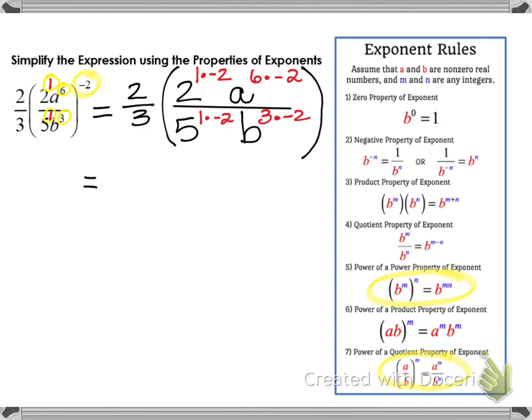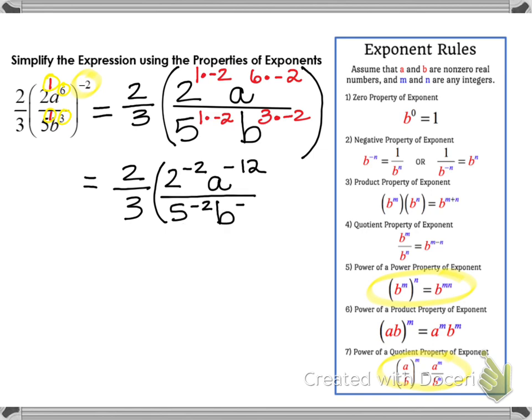Now let's simplify our exponents. In the parentheses, I have 2 to the negative second power and a to the negative twelfth power. In the denominator, I have 5 to the negative second power and b to the negative sixth power. Now that I've applied rule 5 by multiplying powers, I'm going to start using rule number 2 — the negative property of exponents. The negative property of exponents tells me that if I have a negative exponent, I want to take the reciprocal of that term, and by doing so my exponent will become positive.